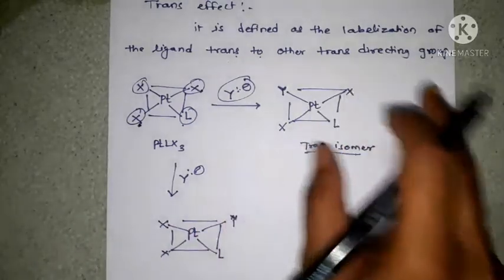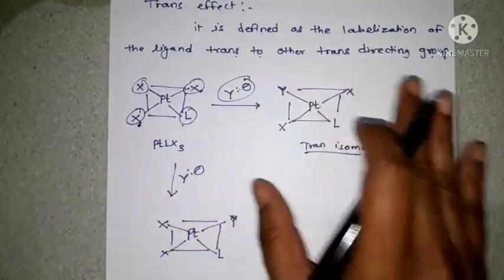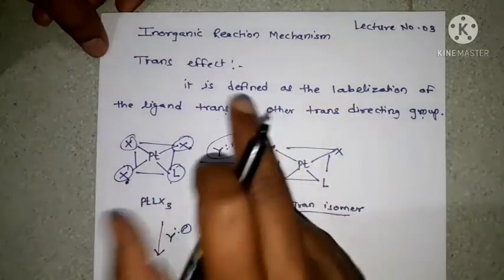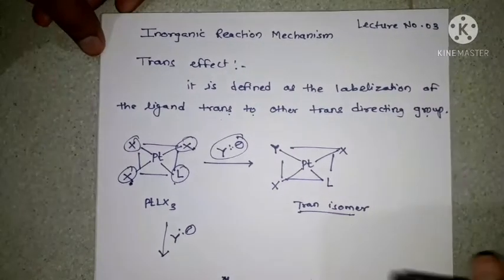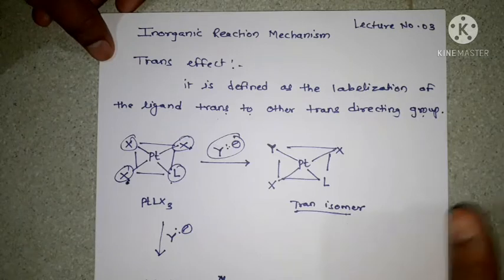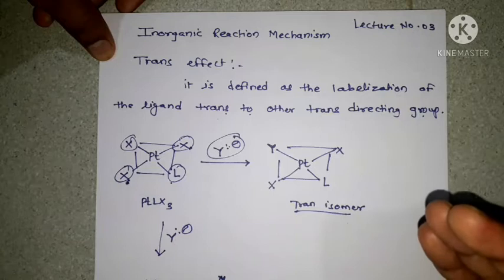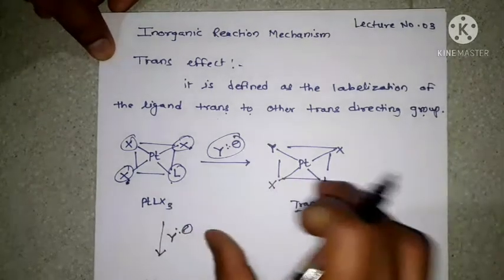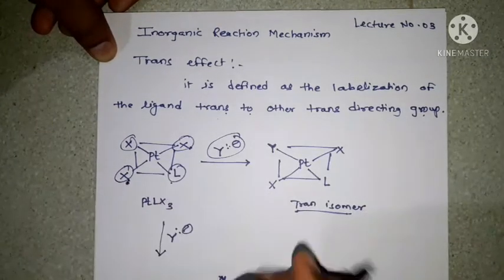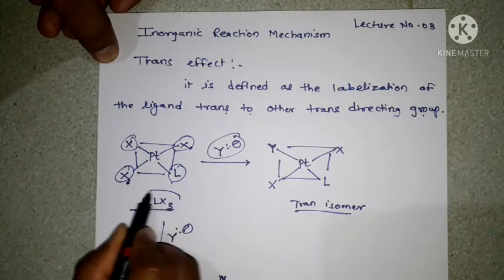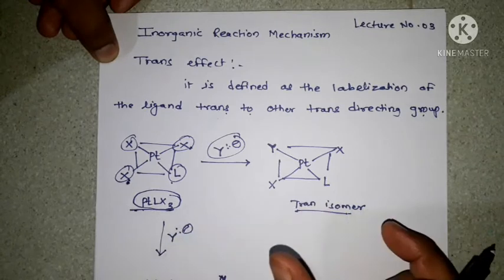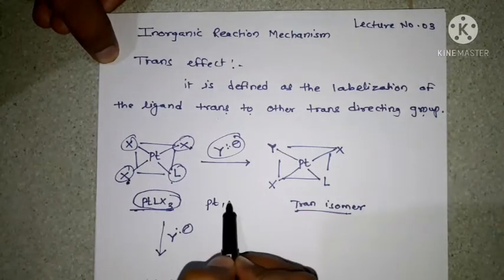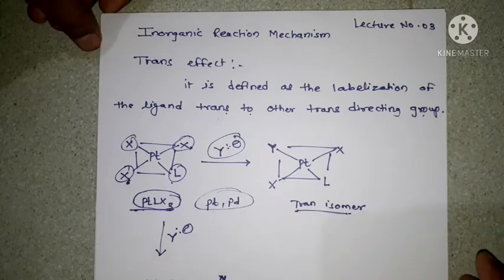Trans effect causes labilization using the trans effect series. This trans effect occurs in square planar complexes — generally PtLX3 type. The metals that show trans effect are platinum and palladium. Remember this.